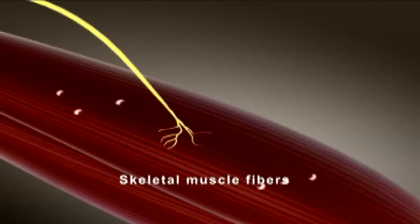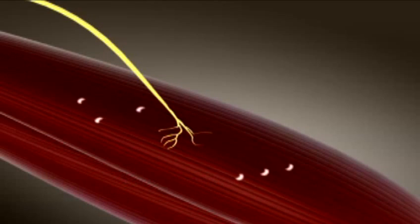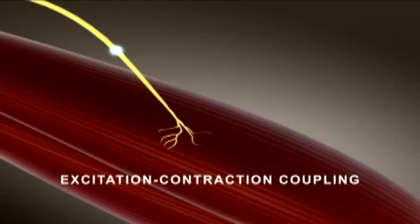The sequence of events that converts action potentials in a muscle fiber to a contraction is known as excitation-contraction coupling.